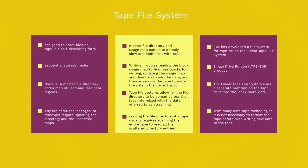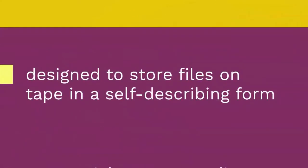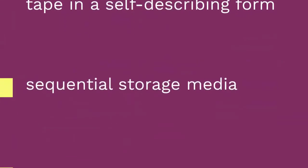A tape file system is a file system and tape format designed to store files on tape in a self-describing form. Magnetic tapes are sequential storage media with significantly longer random data access times than disk, posing challenges to the creation and efficient management of a general-purpose file system.